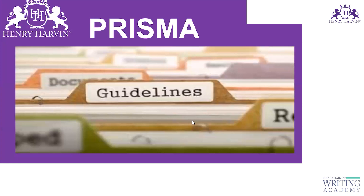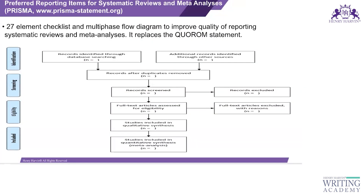The next type of guideline is PRISMA. PRISMA guidelines are used for reporting systematic reviews. PRISMA stands for Preferred Reporting Items for Systematic Reviews and Meta-Analysis. It consists of a 27-element checklist.